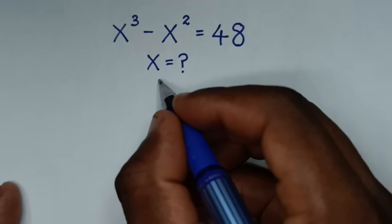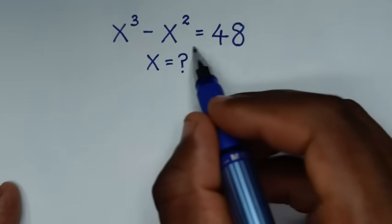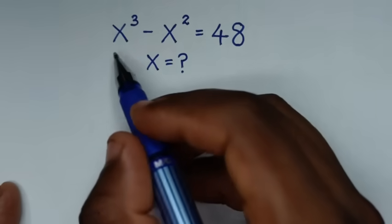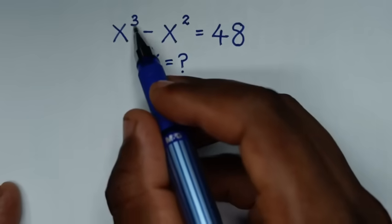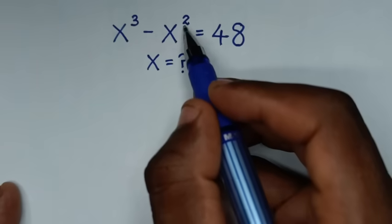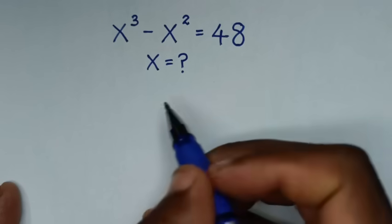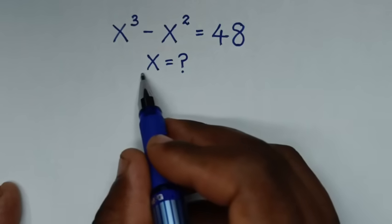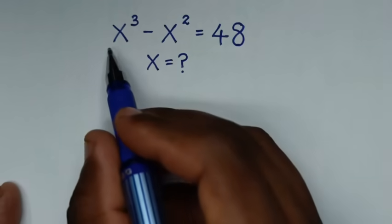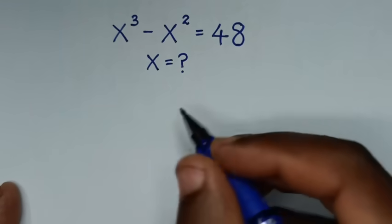Hello, you are welcome to solve this math problem, which is x³ minus x² is equal to 48, to find the values of x from this equation.